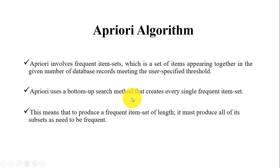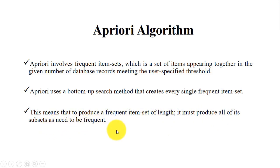Apriori uses a bottom-up search method that creates every single frequent item set. To produce a frequent item set of a given length, all its subsets must also be frequent. It generates combinations known as candidate sets, finds the count for each combination, and matches that count against the minimum support value. If the count is less than minimum support, the combination is discarded; if it meets or exceeds minimum support, it is retained and passed to the next level.